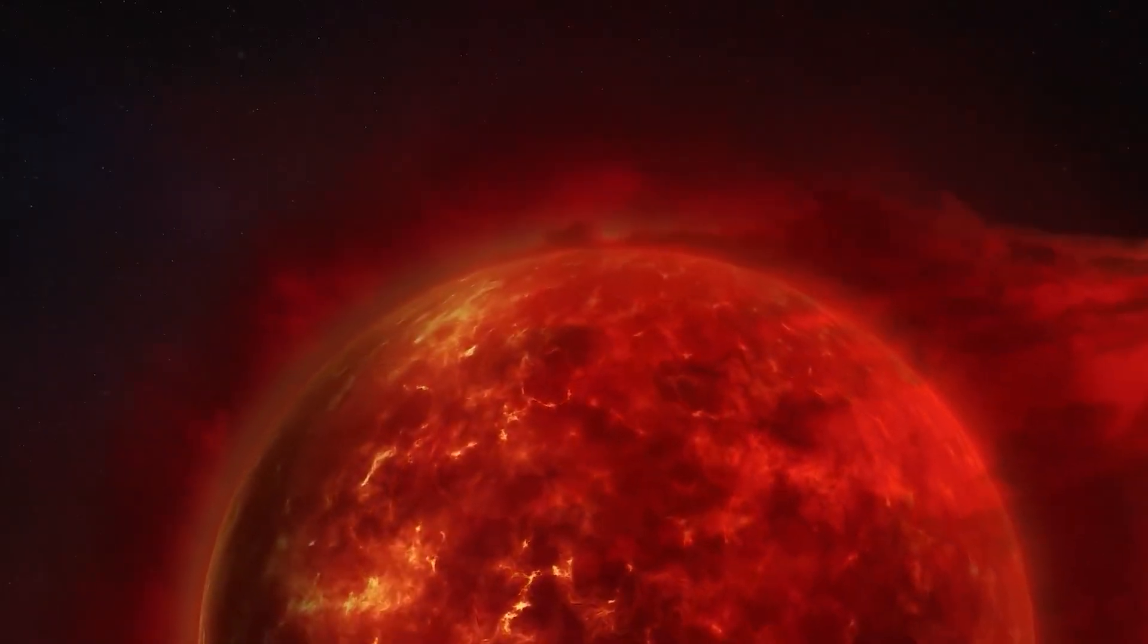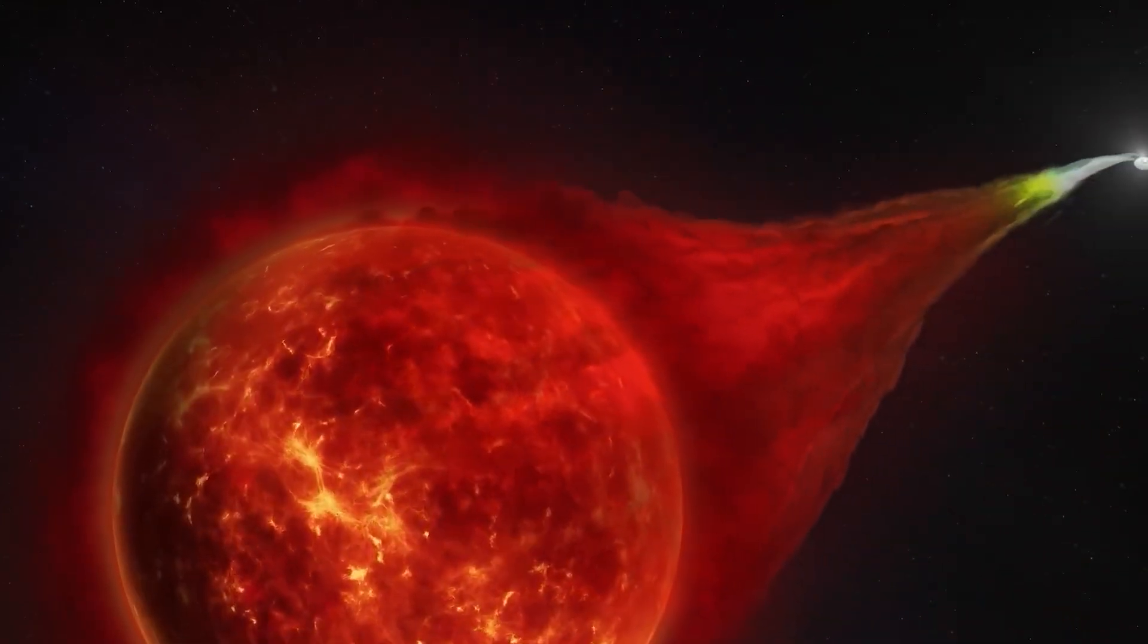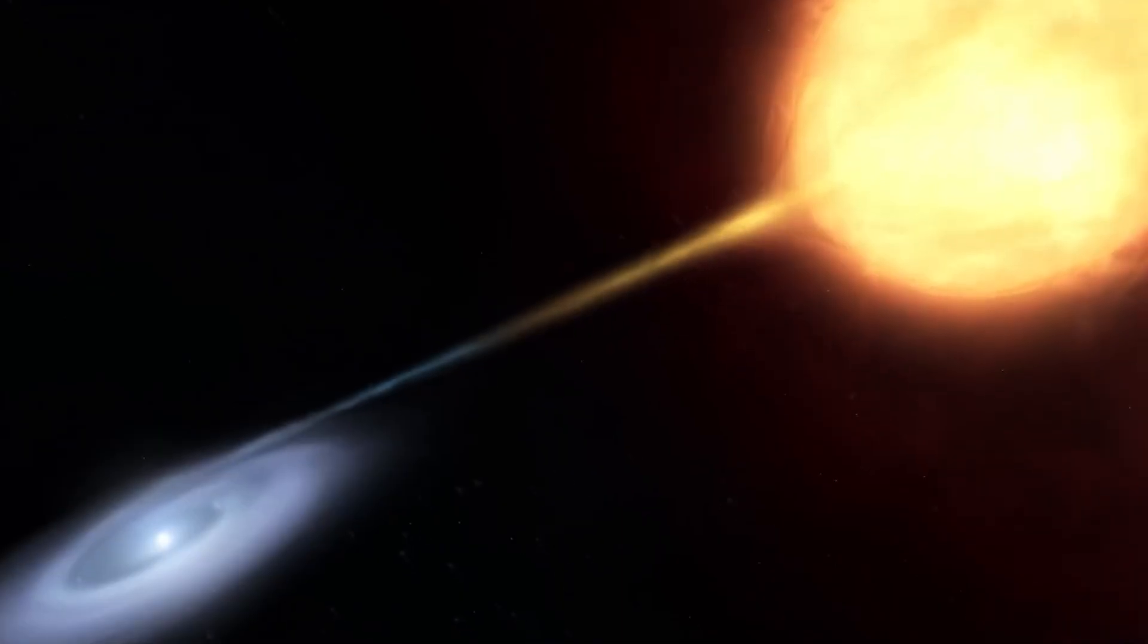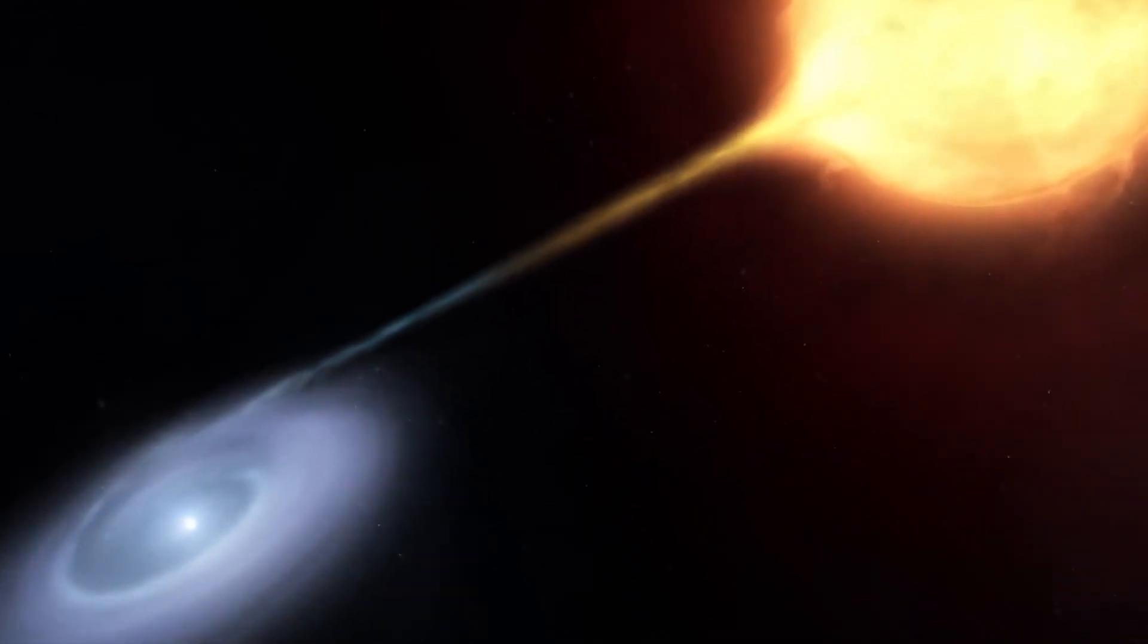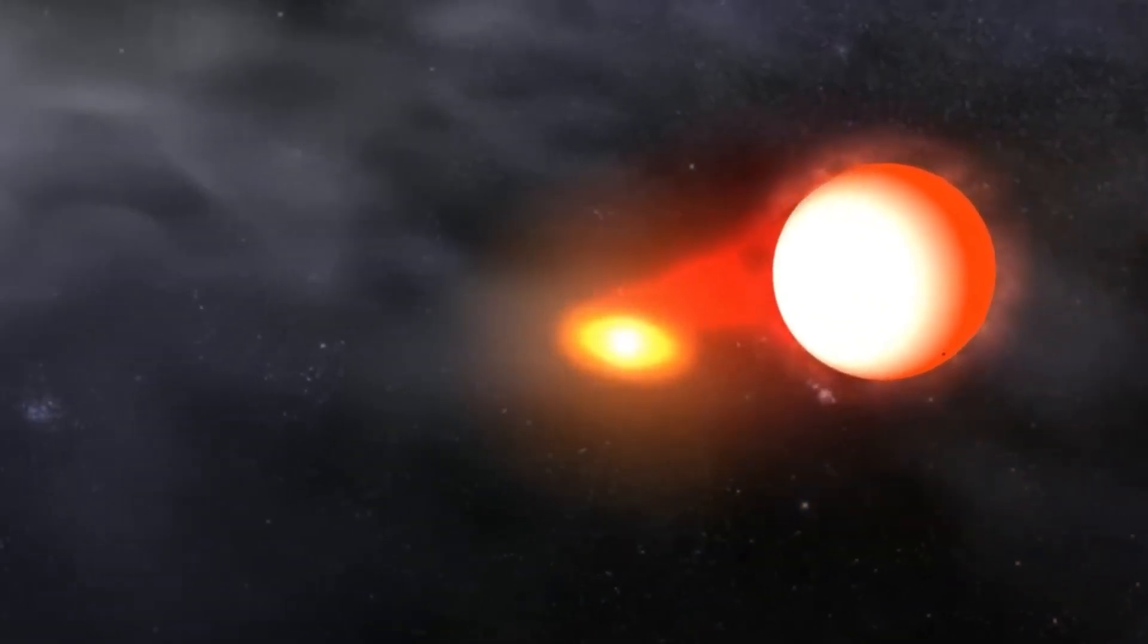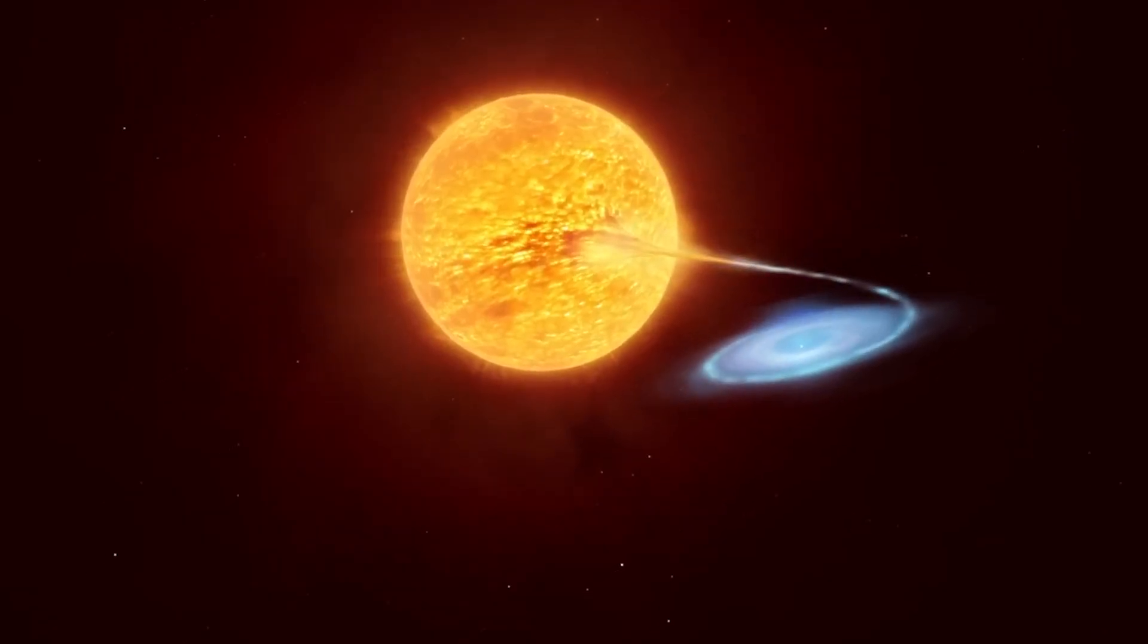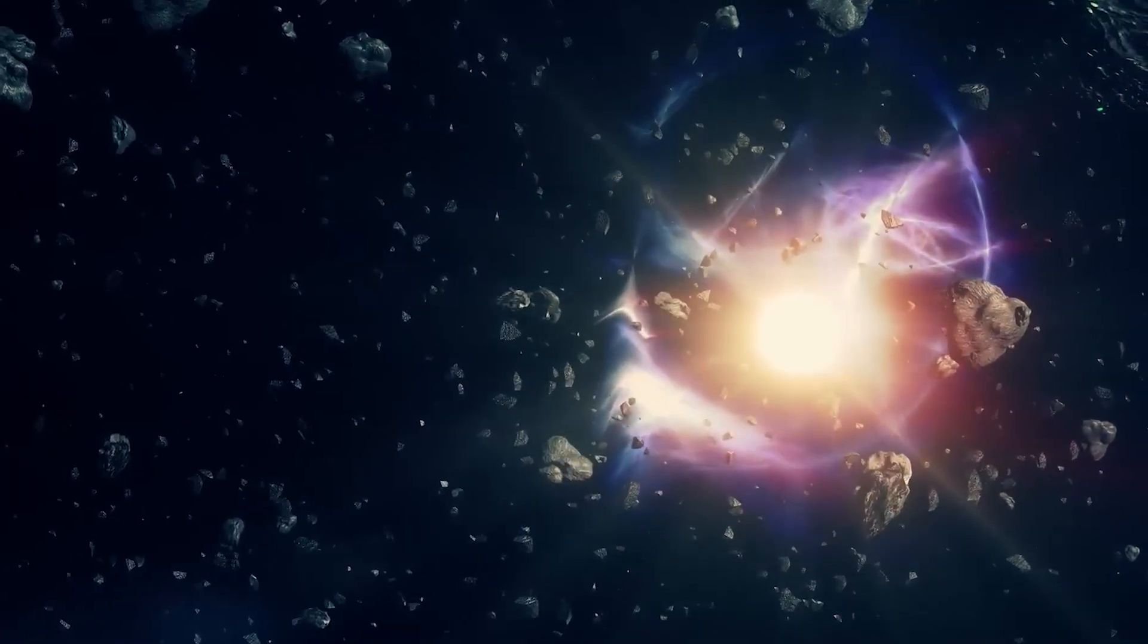T Corona Borealis is actually a binary system, where two stars engage in a deadly dance with each other. One of these stars is a red giant that has gone through all the stages of its life, and has become enormous after exhausting its hydrogen reserves. The second star is a white dwarf, the core of a star that has shed its outer layers, now a super-dense body ready for catastrophic events.